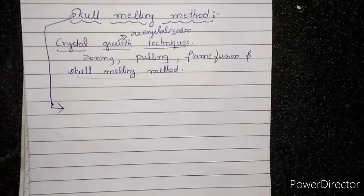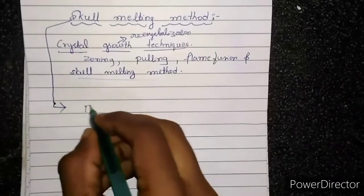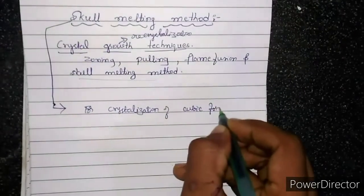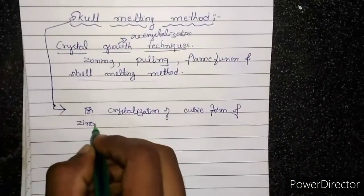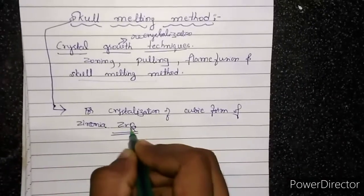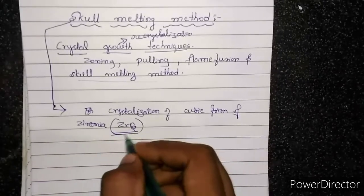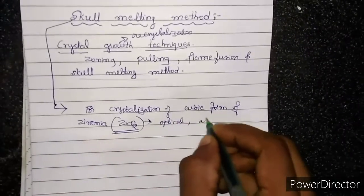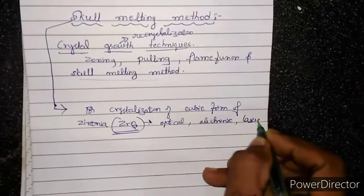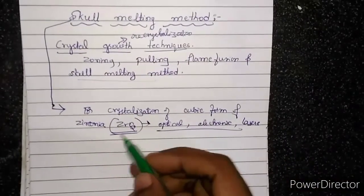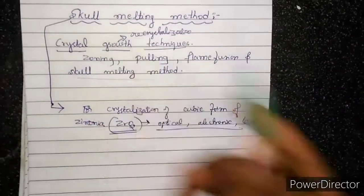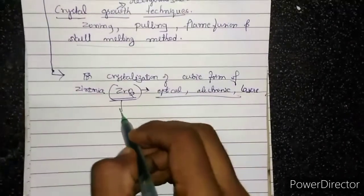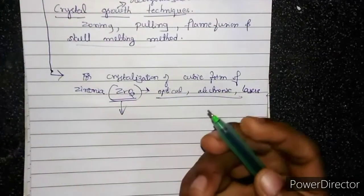Crystal growth means recrystallization — a process to obtain the purest form of a solid. The skull melting method is mainly used for the crystallization of zirconia, specifically the cubic form of zirconia. Zirconia (ZrO₂), also called zirconium oxide, finds applications in optical equipment, electronic equipment, and lasers. We will now see how to crystallize zirconia using the skull melting method.